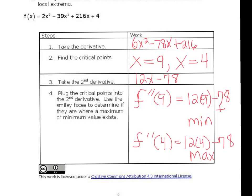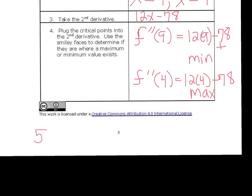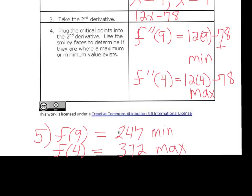Now the one step that I neglected to put in here, but we do need to do it, is the same last step as the first derivative test. We now need to put 9 into the original function and 4 into the original function to get what the actual min and max are. f of 9 happens to be 247, and that's our min. f of 4 is 372, and that's our max. You can also put it in an ordered pair form. So 9, 247 gives you the where and the what the min are, and 4, 372 gives you the where and the what the max are.